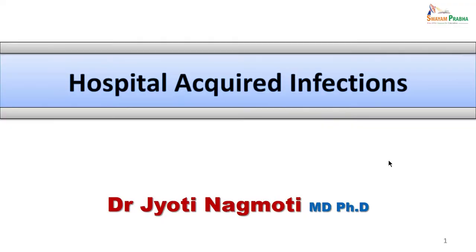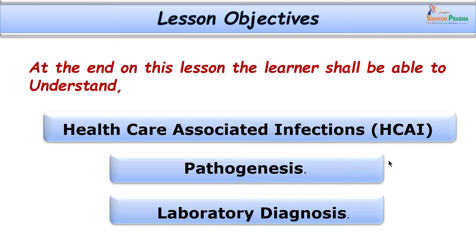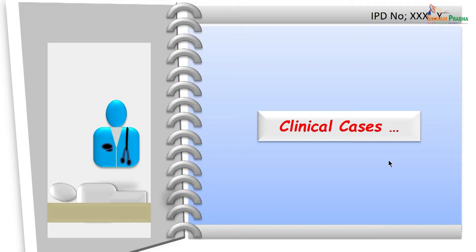Hello friends. In today's class we are going to learn about an important group of infections which occur in healthcare settings — that is the hospital acquired infections. This takes us to the lesson objective: we are going to learn what are healthcare associated infections, why are they important, what is their pathogenesis, and how do we go for their laboratory diagnosis.